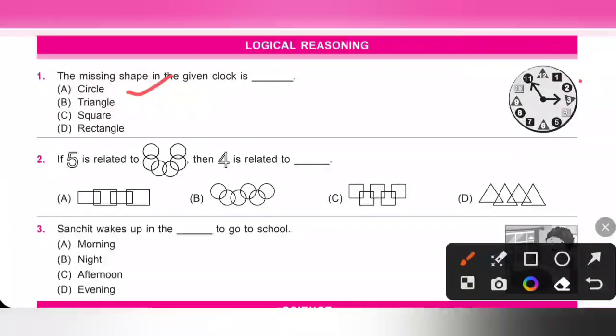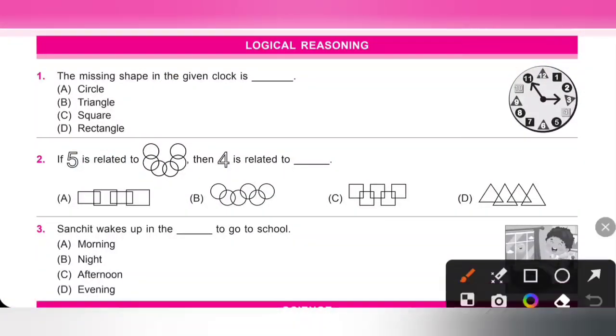yes it is there in the clock. Triangle, triangle shape is also present in the given clock. Square, also present. Rectangle, the missing shape in the given clock is rectangle. So option D is the correct answer.